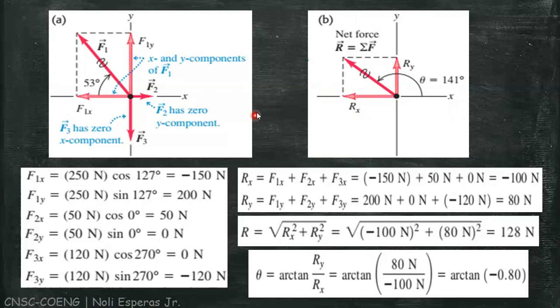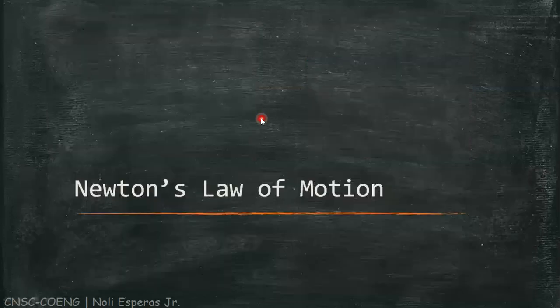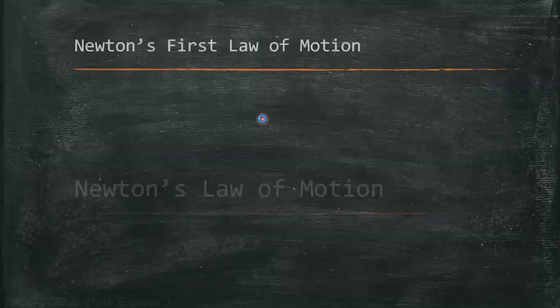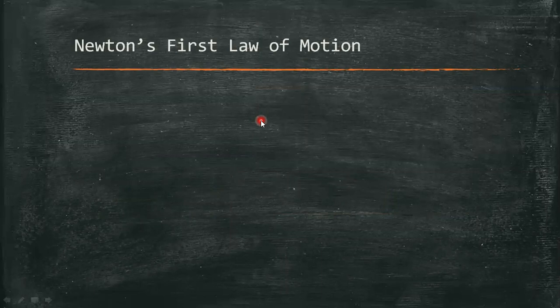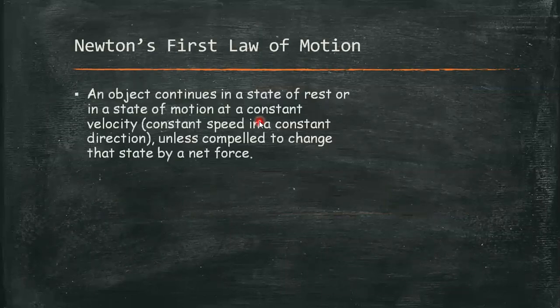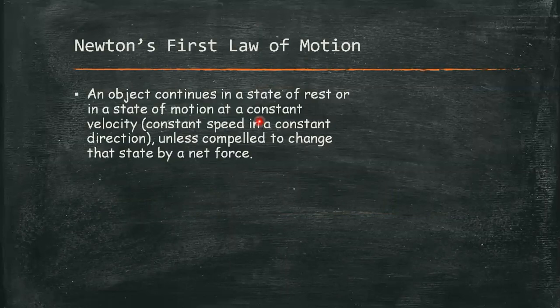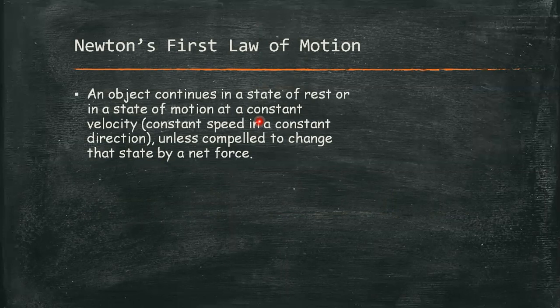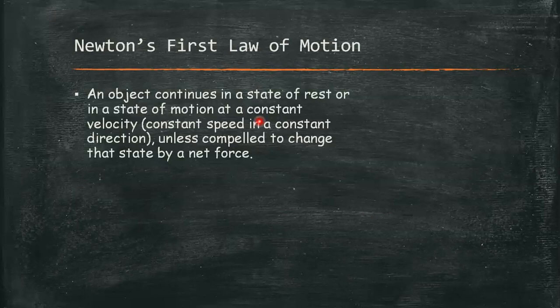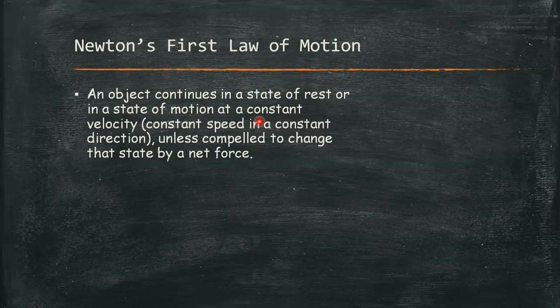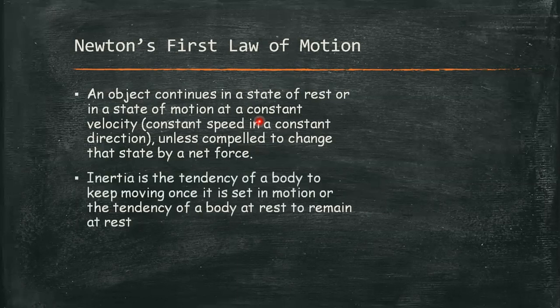So all of this concept will lead us to Newton's First Law of Motion, which states that an object continues in a state of rest or in a state of motion at constant velocity, constant speed in a constant direction, unless compelled to change that state by a net force. The tendency of a body to keep moving once it is set in motion results from a property called inertia. The tendency of a body at rest to remain at rest is also due to inertia.